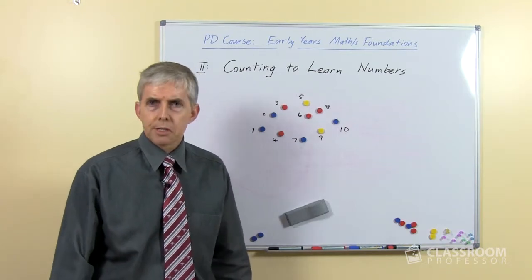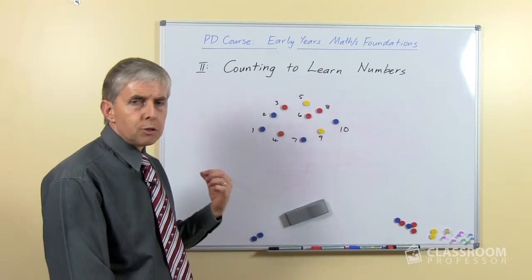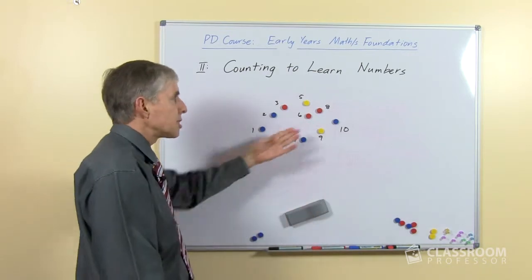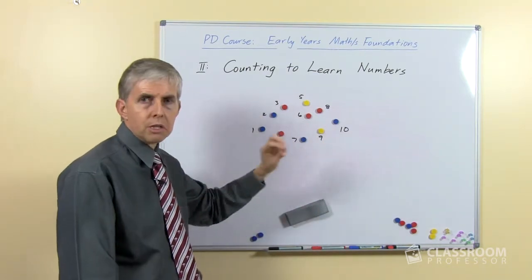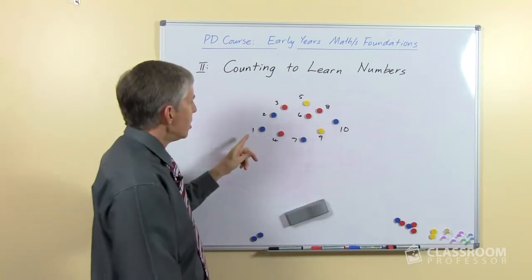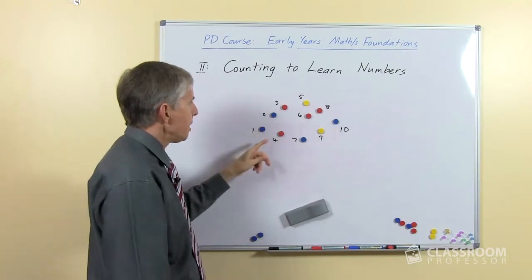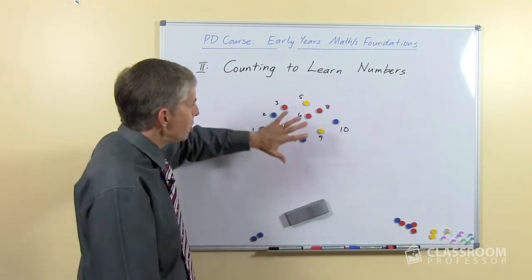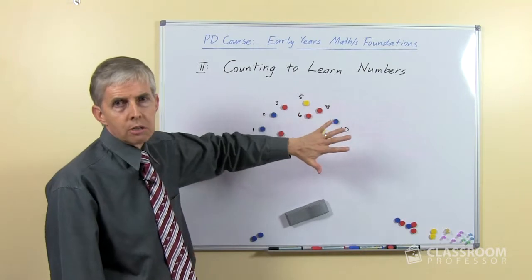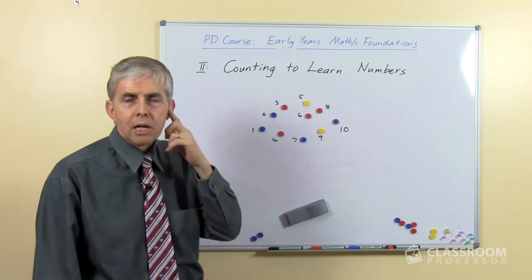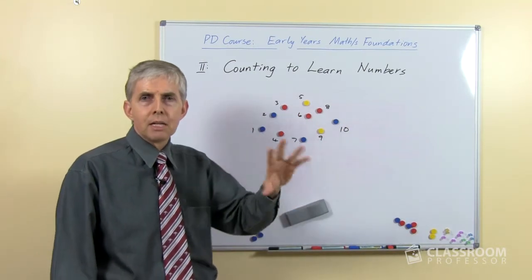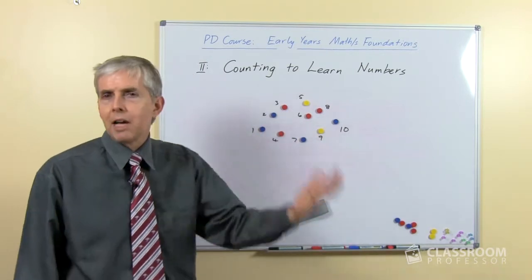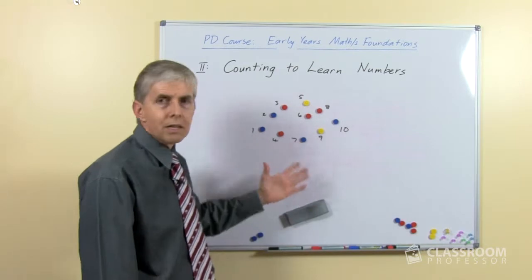What have we just done? We've been through the sequence of counting names — and in fact the symbols as well, because I've recorded this using the written numerals from 1 to 10. We had to get that sequence correct; we couldn't leave one out. If we gave this task to a child who didn't know the sequence really well — who kept getting 6, 7, 8 mixed up or left 7 out — they wouldn't get the right answer.